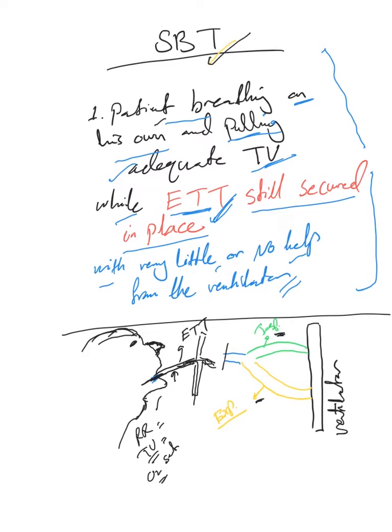If he passed this T-piece, that tells you probably he's ready for the ET tube to come out. These are quickly subjective values you can look at the monitor and see if he's ready. We'll come to the objective size. So the first thing, this will be called T-piece trial: basically disconnect him from the ventilator and provide the patient with oxygen through the ET tube.